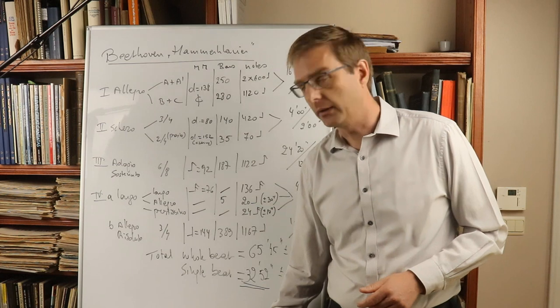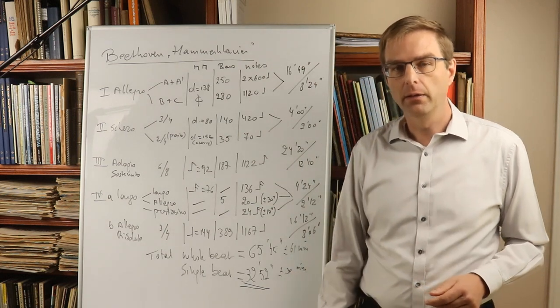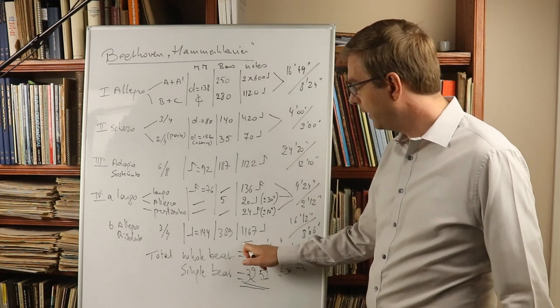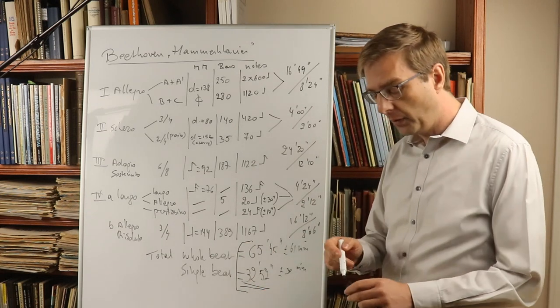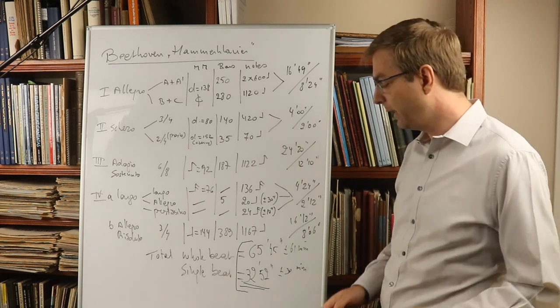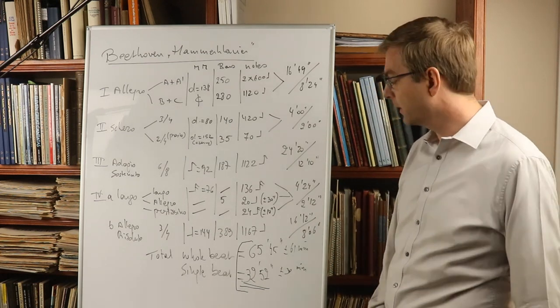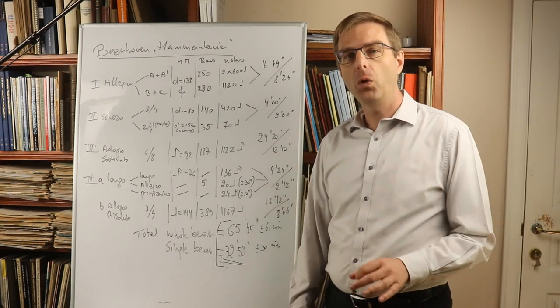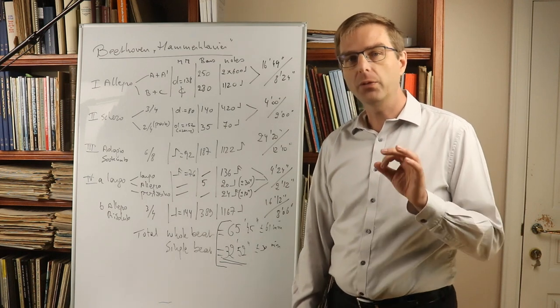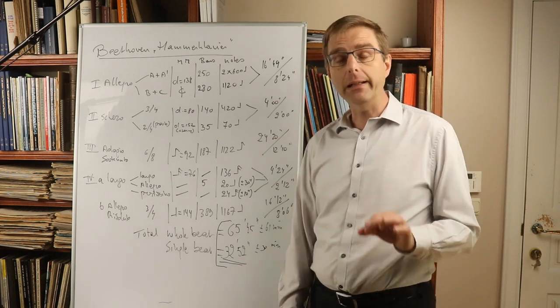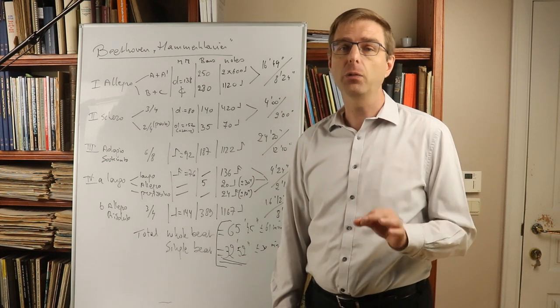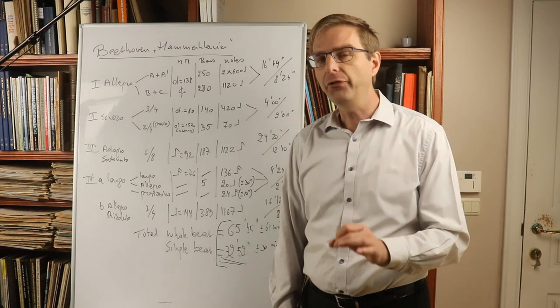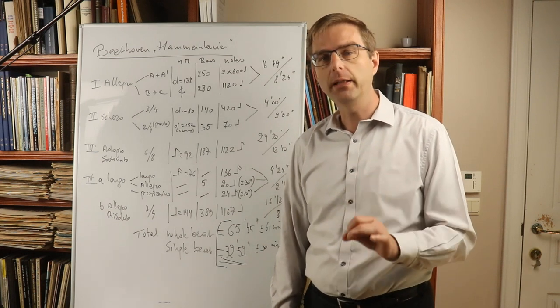So there you have it. Liszt's Hammerklavier sonata lasted about one hour. And of course, if you then have to choose between one of those numbers, it's very easy to see where his performance was close to. It's no doubt that the 1836 performance in Paris, the one that was reviewed by Berlioz, in which Berlioz stated that Liszt was following accurately the tempo indications by Beethoven, that that was a 100% whole beat performance.